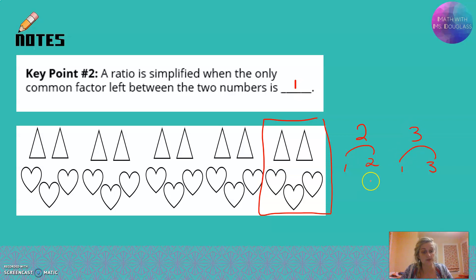2 is made up of 1 times 2. 3 is made up of 1 times 3. They're both prime numbers, just one factor pair. And you can see the only common factor is the number 1. If I divide 2 divided by 1, I still get 2. If I divide 3 divided by 1, I still get 3. So that's not simplifying it anymore. That's how I know I'm done simplifying.